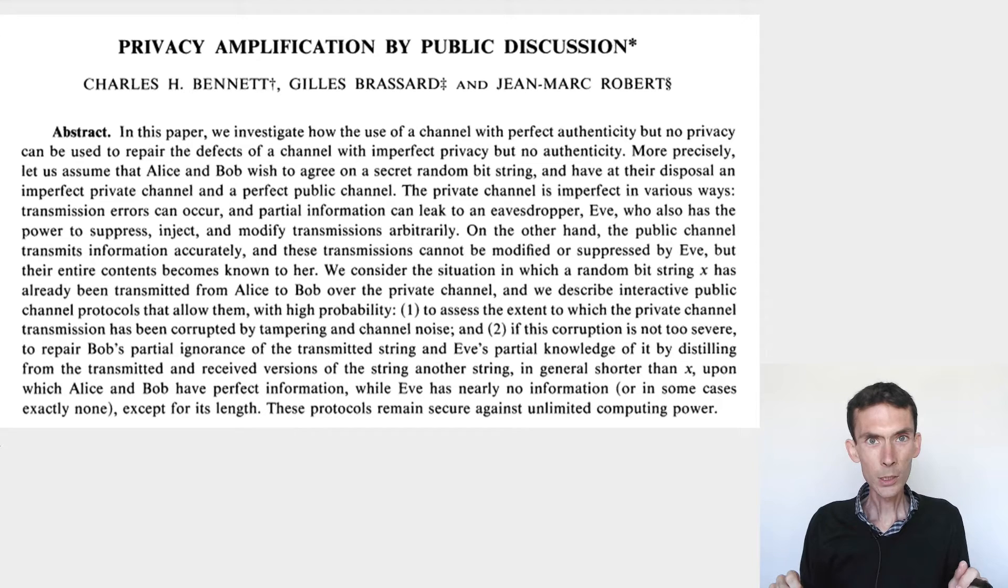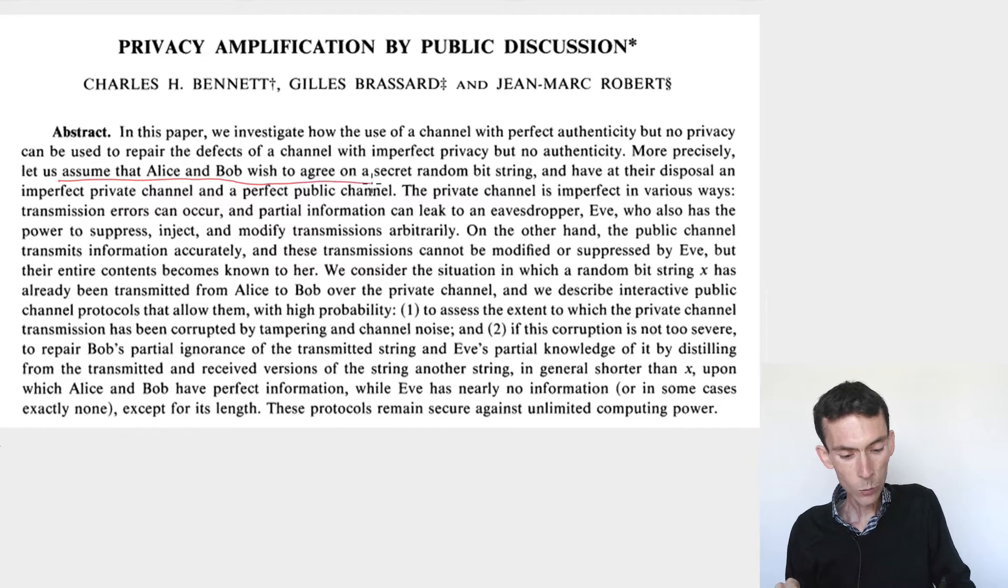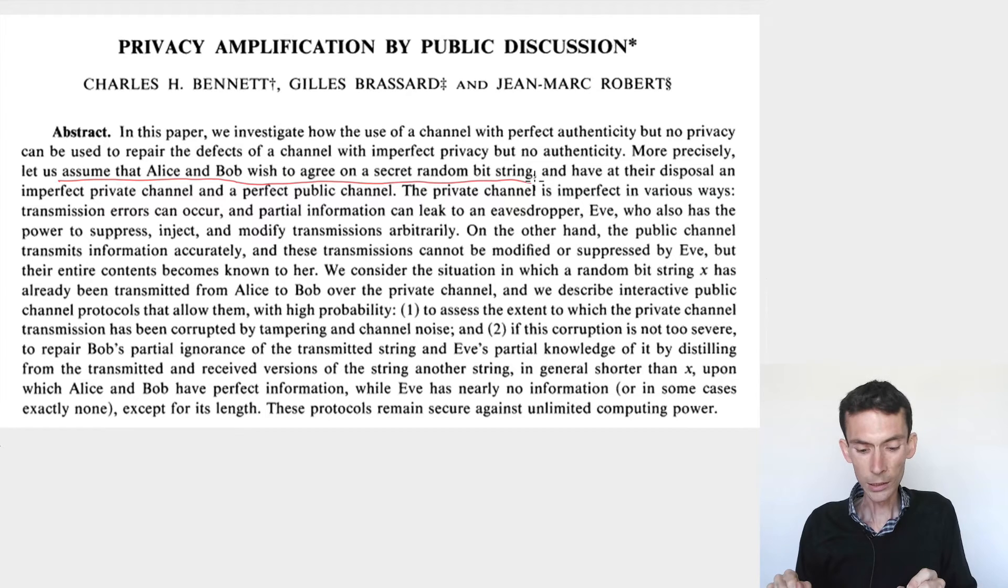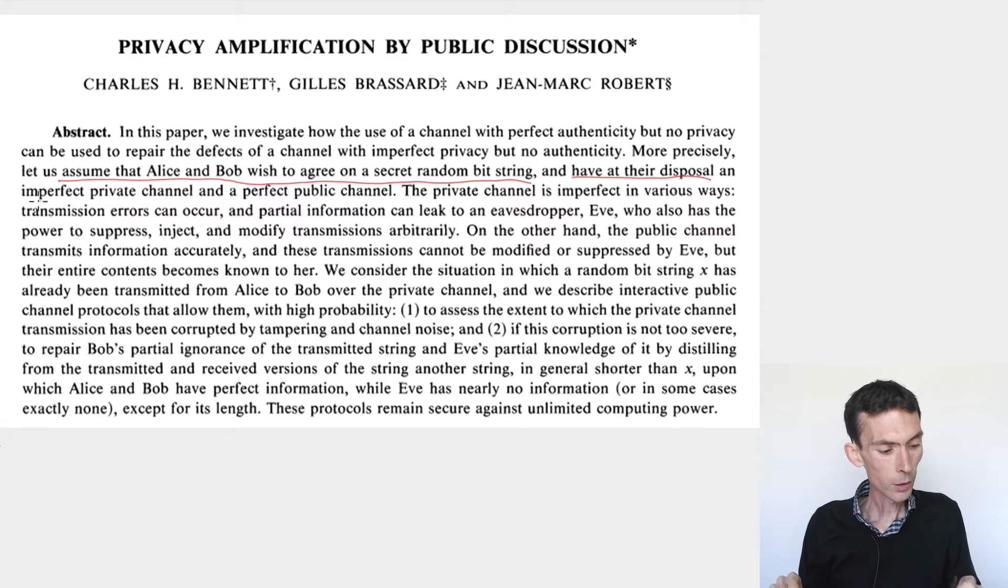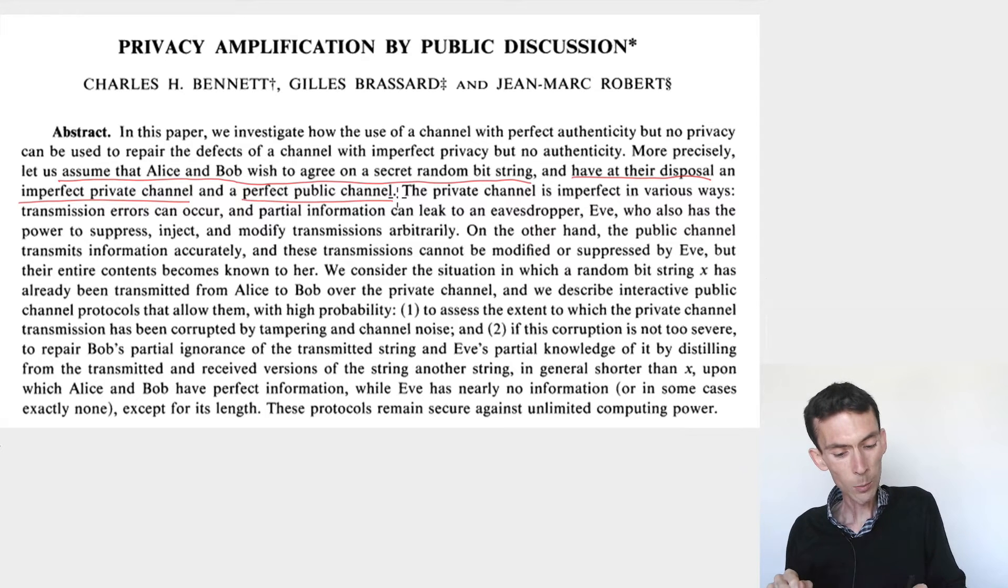Let me just focus on the one important sentence here that succinctly describes the task. It says: let us assume that Alice and Bob wish to agree on a secret random bit string. So that's the ultimate goal, generating the key, which should be uniformly random. What do they have at their disposal to achieve this task? Two things: an imperfect private channel and a perfect public channel.